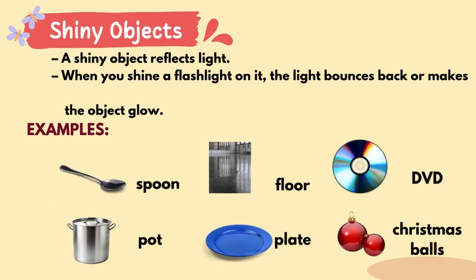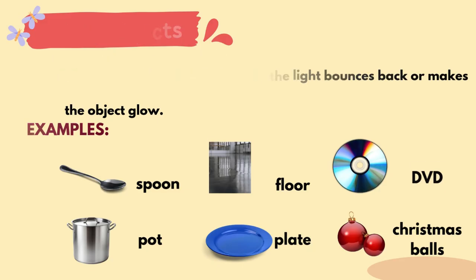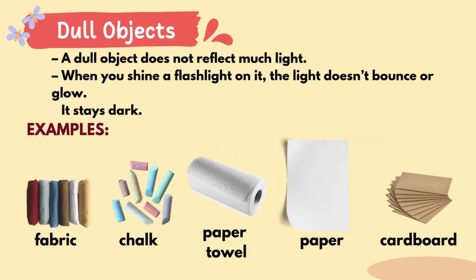Shiny Objects. A shiny object reflects light. When you shine a flashlight on it, the light bounces back or makes the object glow. A dull object does not reflect much light. When you shine a flashlight on it, the light doesn't bounce or glow — it stays dark. Examples of dull objects: fabric, chalk, paper towel, paper, and cardboard.